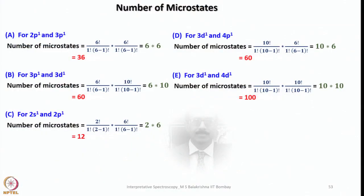Here I have given examples for 2p1 and 3p2. If you want to determine the combined microstates for two electronic configurations — say one electron in 2p1 and one electron in 3p1 — it is much simpler: determine the number of microstates for each separately, then take the product. That gives you the combined number of microstates for the two electronic configurations.